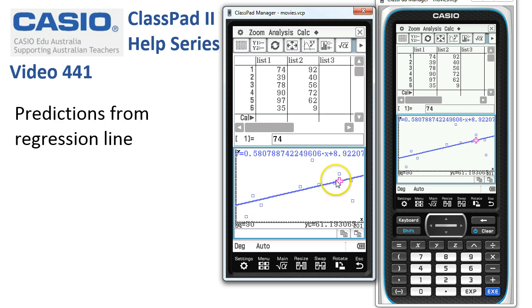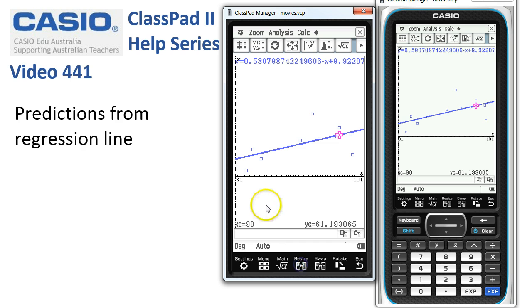The X value is 90. When we say OK, ClassPad jumps straight to 90. I'm just going to tap Resize here, and you can see when X is 90 on the regression line, the Y coordinate is 61.19.